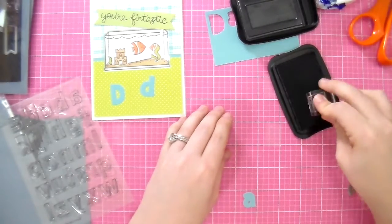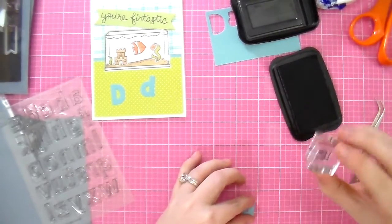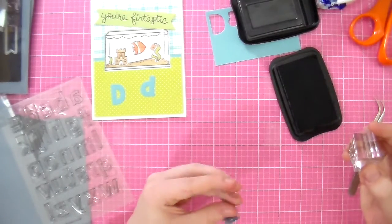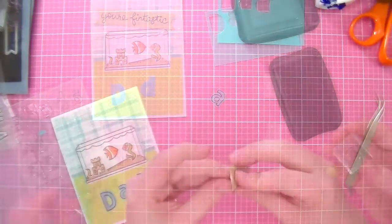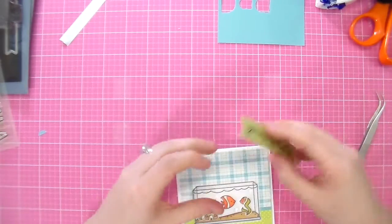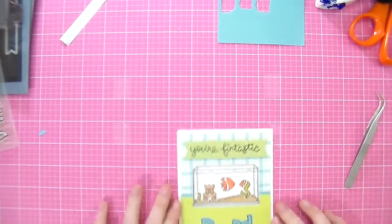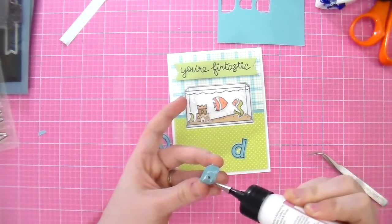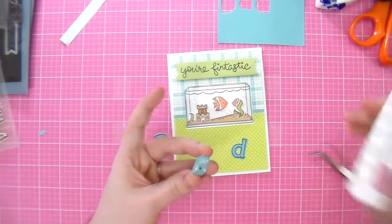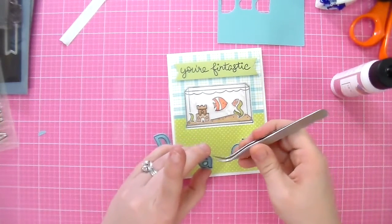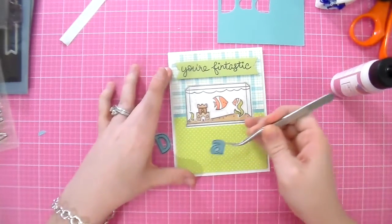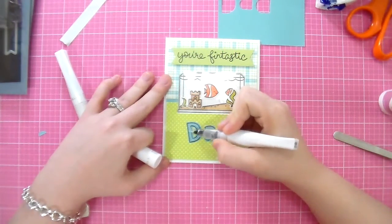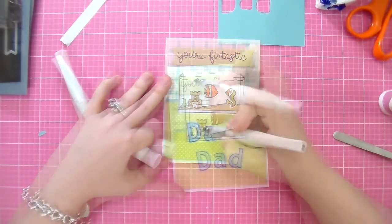So here I'm just using some Stayz On black ink to do that. And now I'm using foam tape to pop up the banner. And I'm gluing down the letters for dad. I started with the A so I can make sure to center it on the card. And then I put the other letters on each side. I kind of slanted them a little bit so it kind of has this upward curve.